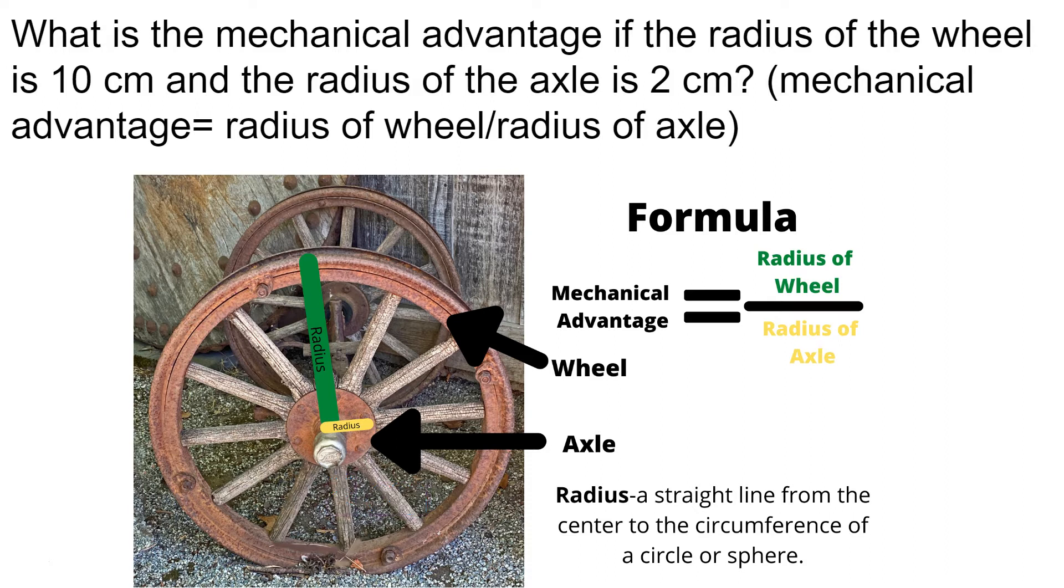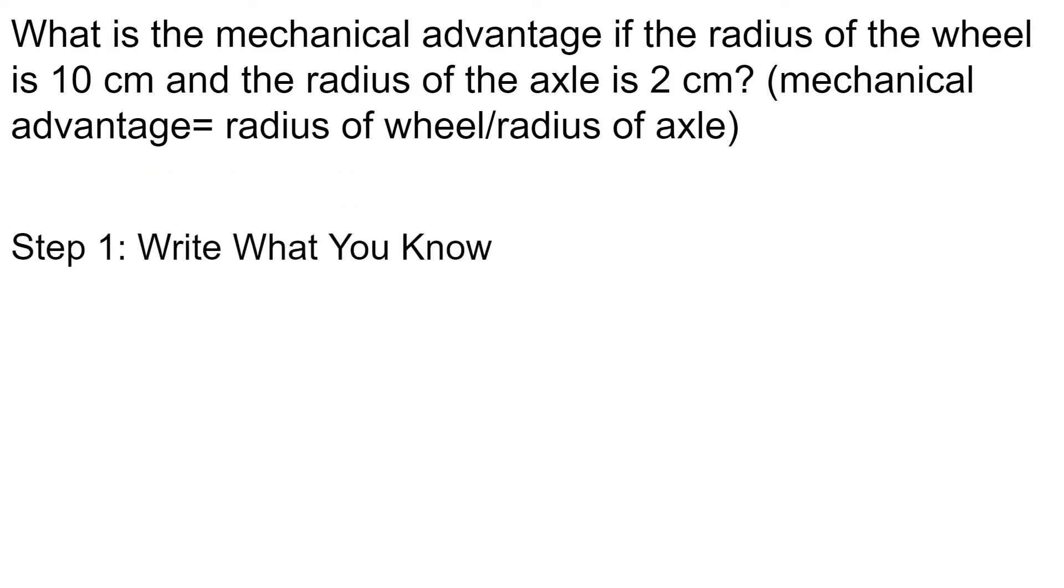The formula for this problem is mechanical advantage is equal to the radius of the wheel divided by the radius of the axle. So let's figure out what we know.